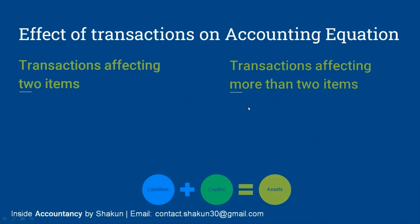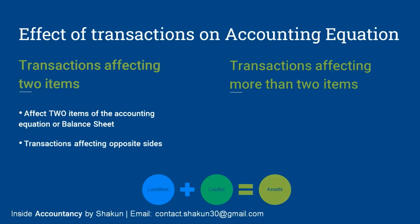Transactions affecting two items are those that affect two items in the accounting equation or the balance sheet. These transactions affect the opposite sides of the accounting equation, or they may affect the same side but in opposite directions — that is, an increase and a decrease on the same side.